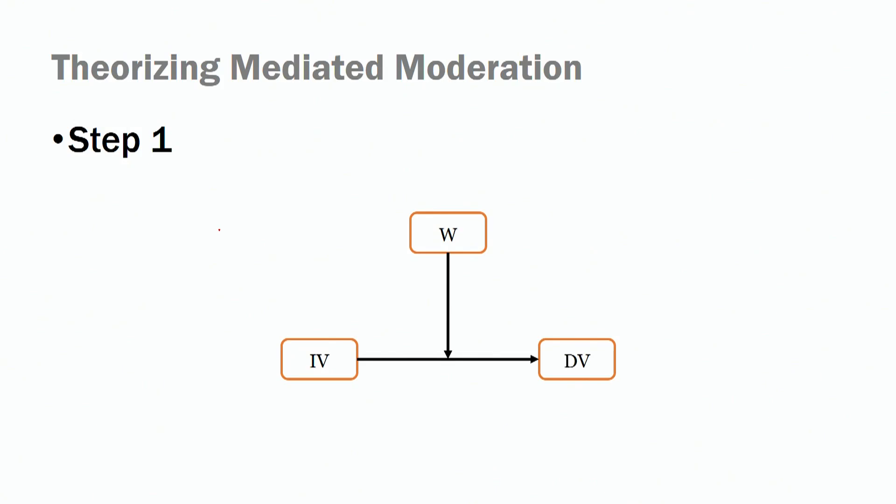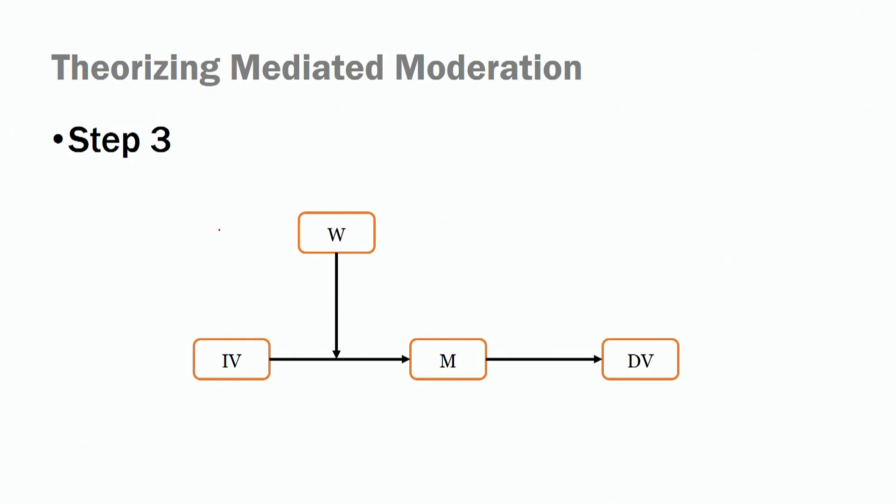So how do we theorize mediated moderation models? The first step is to conduct a moderation model in which we look at the relationship between the independent variable and the dependent variable, and how that changes based on levels of the moderator — this is exactly the same test we did when conducting moderation models. But then you have the second step, in which you conduct a moderation model where your dependent variable is now your mediator. So you are looking at the effects of the interaction term on the mediator. Finally, you theorize about the whole model — the effects of the interaction term of the independent variable and your moderator influencing your dependent variable via a mediator.